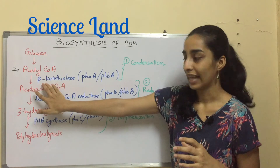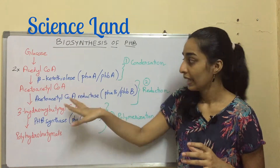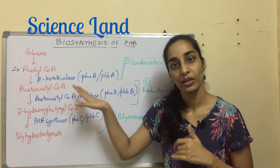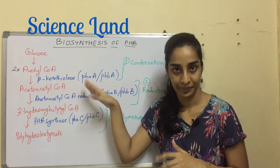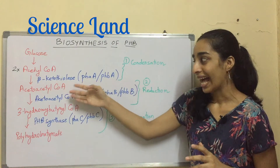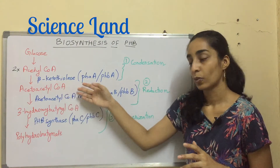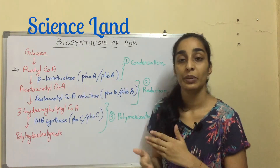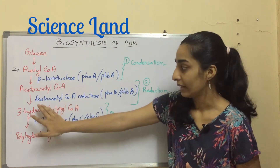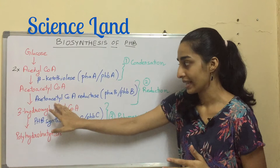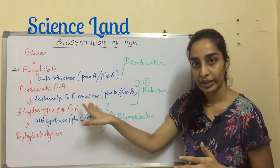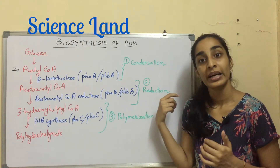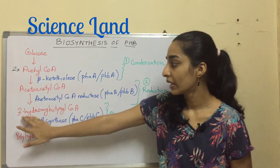The condensation is carried out by the enzyme beta-ketothiolase, and it produces acetoacetyl coenzyme A. Once acetoacetyl coenzyme A is formed, it will be reduced by the enzyme acetoacetyl coenzyme A reductase, because the second step is reduction.